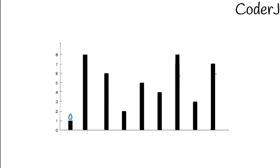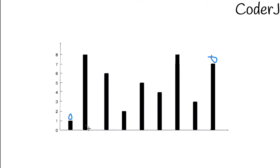I'll set the first pointer to the first rod and the second pointer to the last rod. A higher gap generally means more water can be stored. I'll calculate how much water these two rods store — that's the gap between them multiplied by the lesser height — and store that value in a variable called 'answer.'